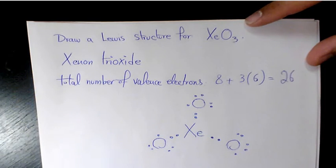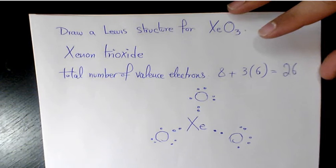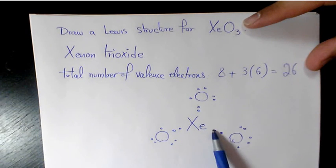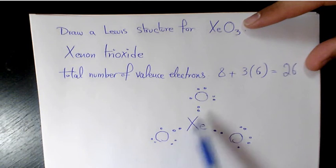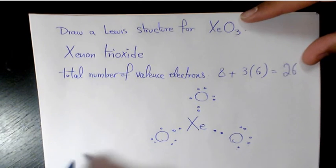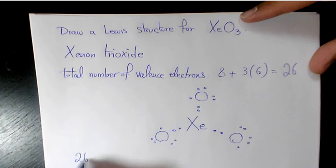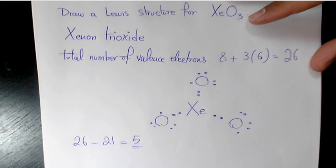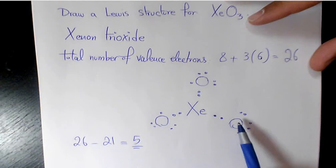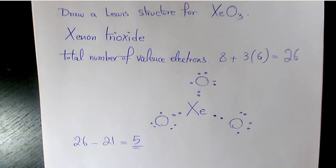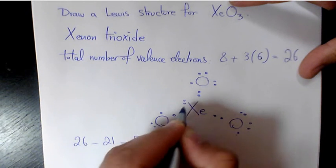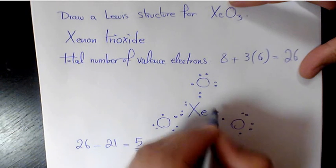Now let's see how many valence electrons we have used. Each oxygen accounts for 7 electrons, and with three oxygens that's 21 total. So 26 minus 21 means 5 more electrons remain, and we place those 5 remaining electrons on the central xenon atom.